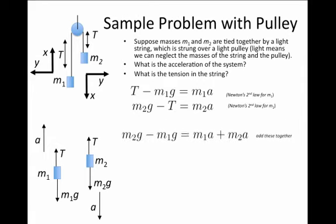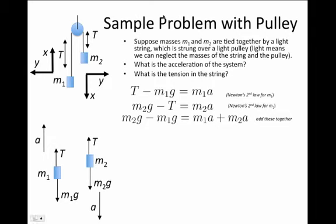If I add these two expressions together, in other words, just take the left-hand side of this expression and the left-hand side of this expression and add them, the T's will cancel, because it's positive here and negative there. I'm left with m2g minus m1g on the left-hand side.